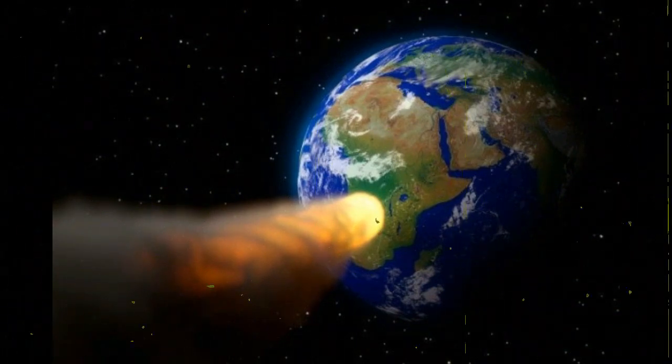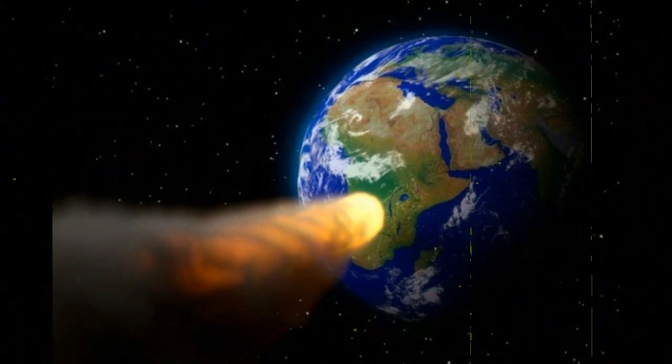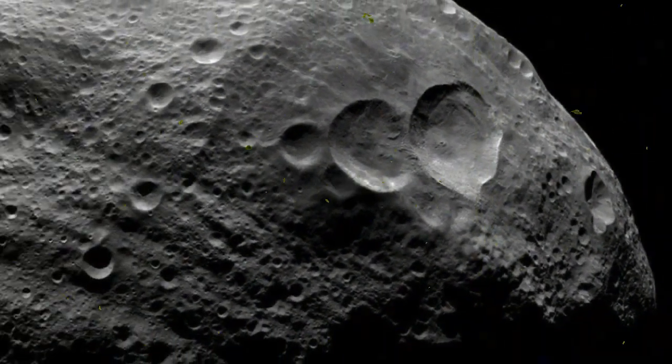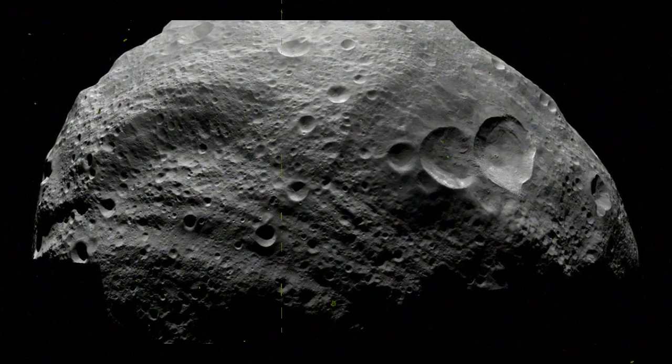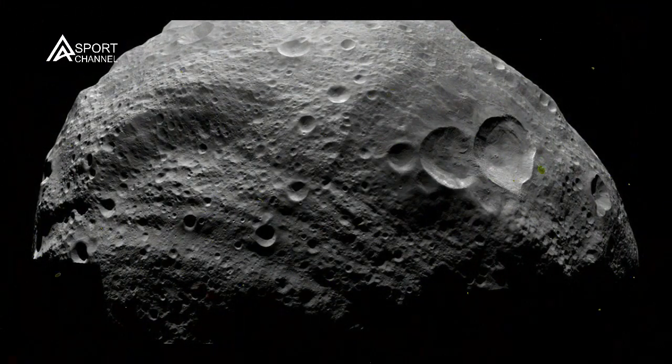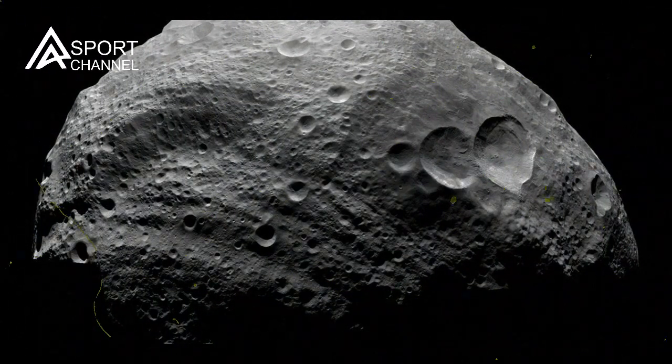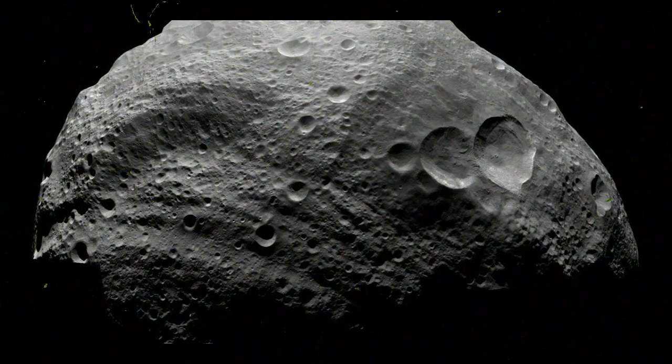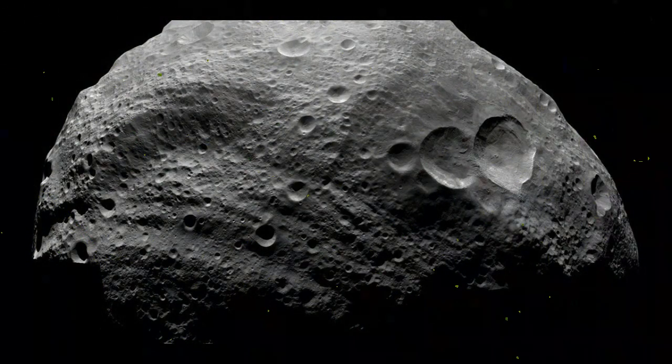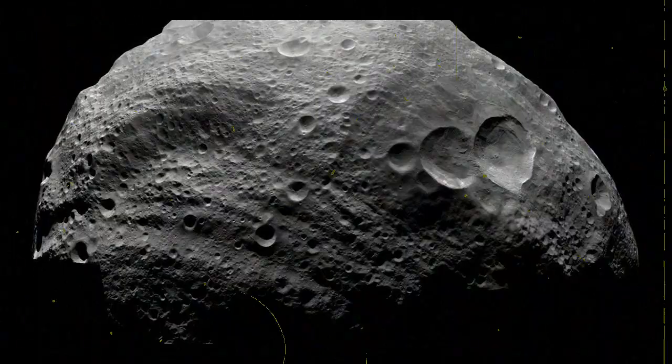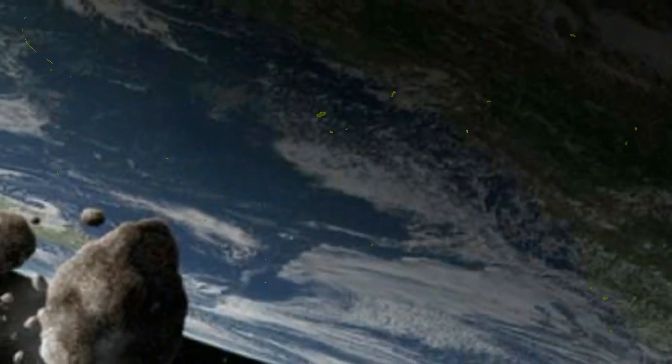Comets and asteroids that orbit within our cosmic neighborhood, approaching Earth within 1.3 astronomical units (120.9 million miles or 194.5 million kilometers), are known as Near-Earth Objects (NEOs), according to NASA's Center for Near-Earth Object Studies (CNEOS).